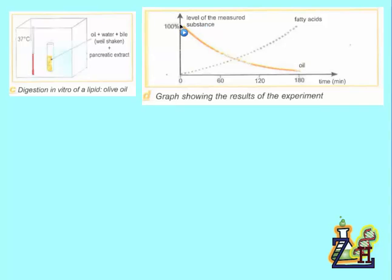When they were doing the experiment, they measured two values: the percentage of oil and the percentage of a substance called fatty acids. As we see in this graph, they recorded the measured factor in a graph.